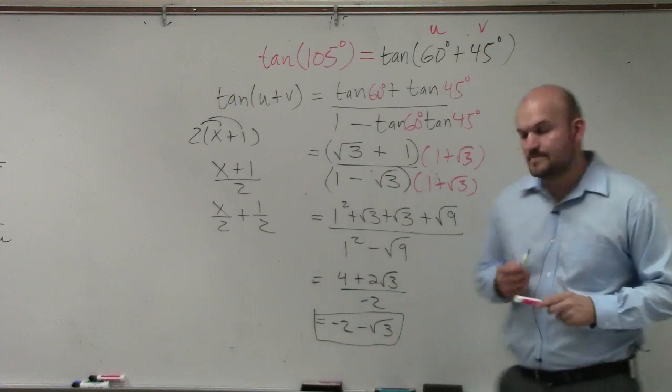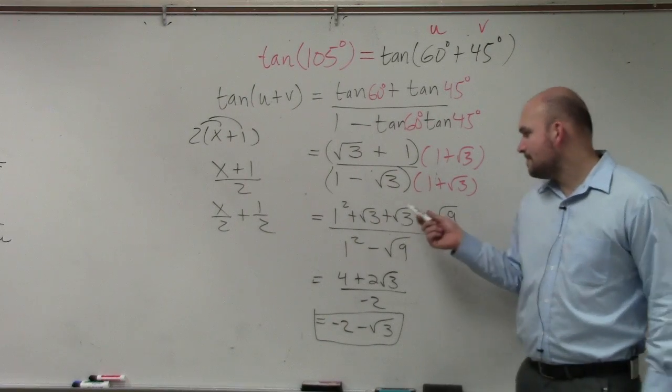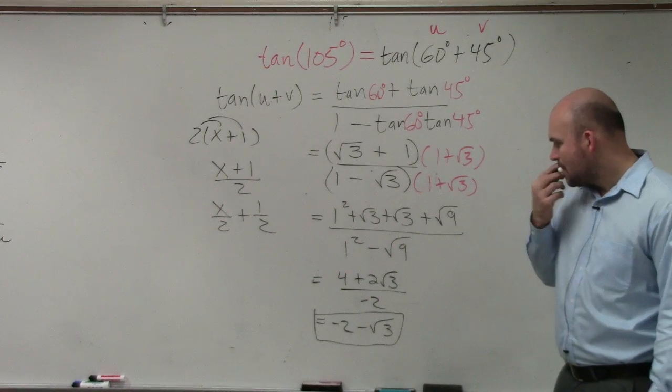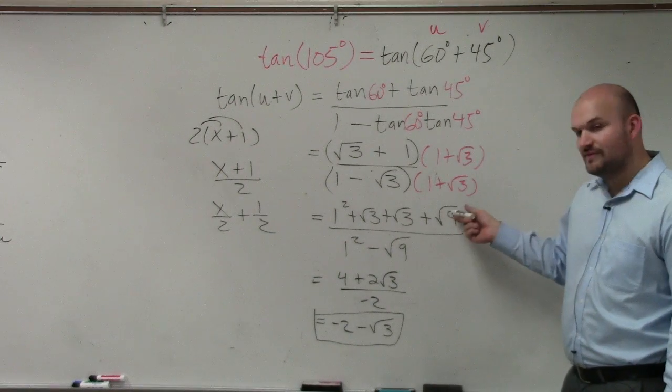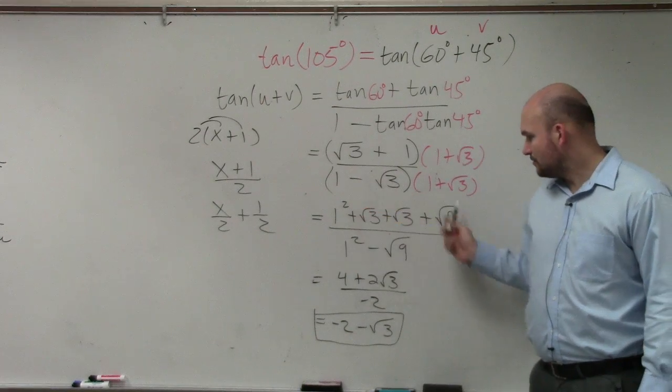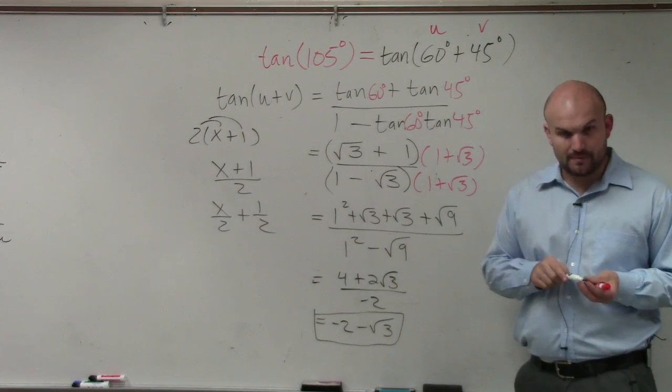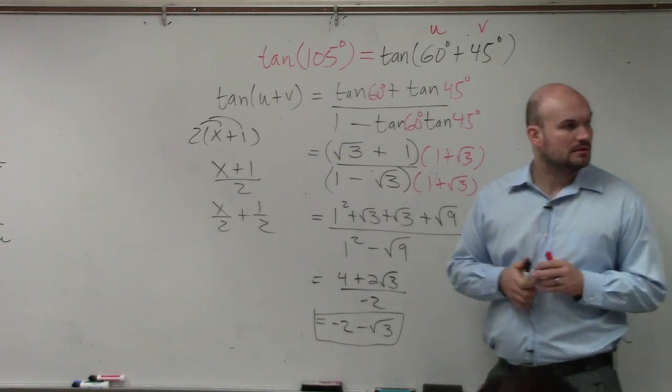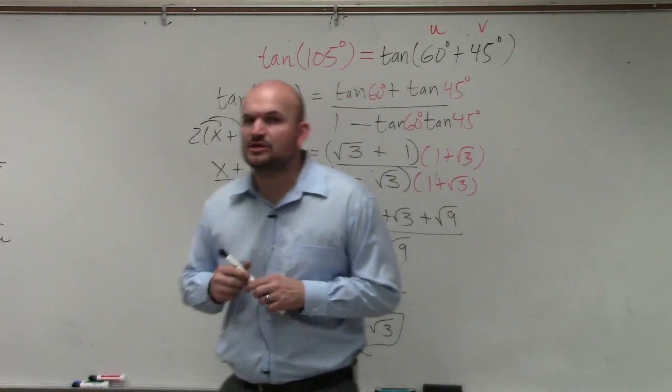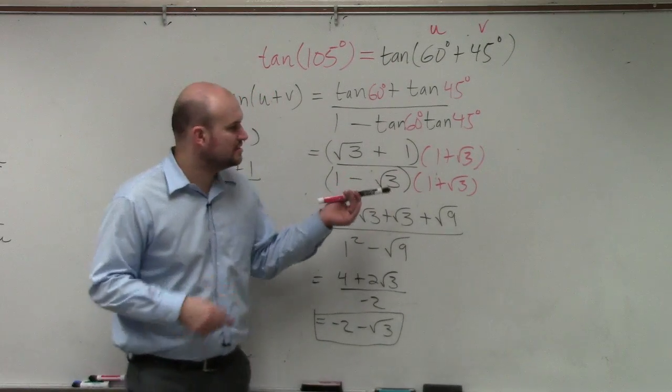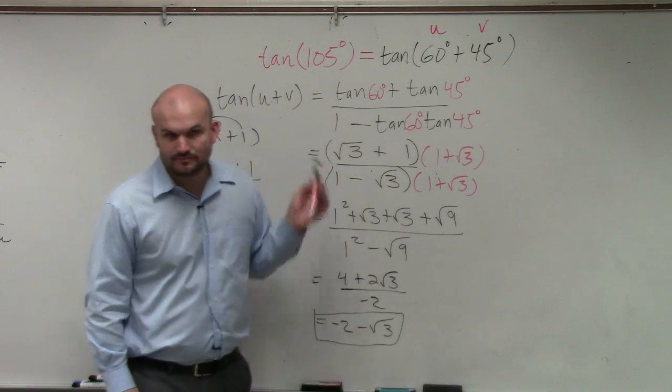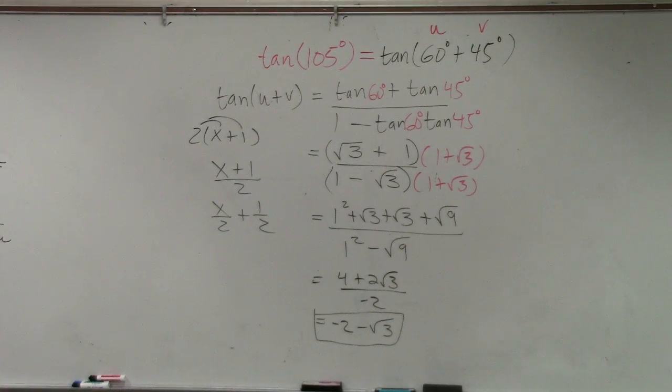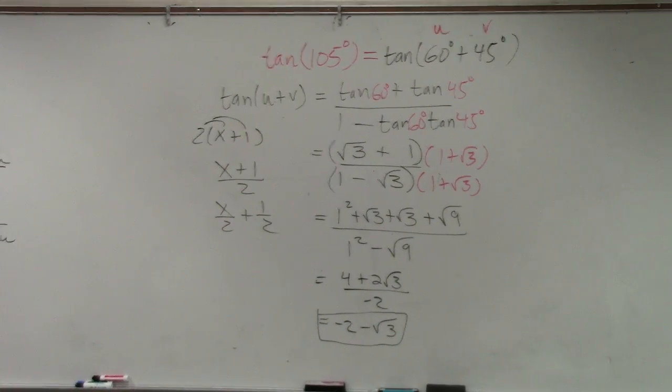But where did the 4 come from? Where did the 9 come from? Square root of 9 is 3. I realize that. But where's the 4? Square root of 9 is 3. 1 squared is 1. 3 plus 1 is 4. Anybody have any other questions on this or the work? Because we've gone through this. No, we're good now. Thank you.